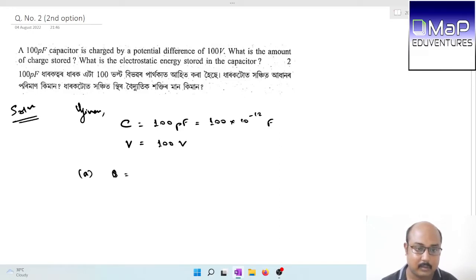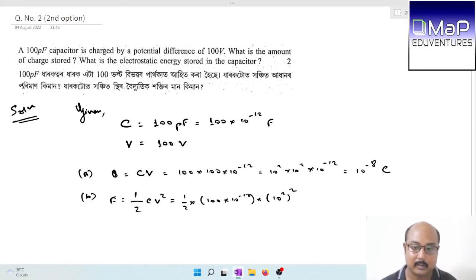Amount of charge stored q equals C times V. Substituting values, 100 into 100 into 10 to the power minus 12, which equals 10 to the power minus 8 coulomb. The energy stored is half CV squared, which equals half into 100 into 10 to the power minus 12 times 100 squared. The energy stored is 5 into 10 to the power minus 7 joule.